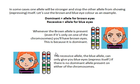The only time this daughter could have blue eyes is if she inherited the chromosome from her dad that had the blue allele and the chromosome from her mum that had a blue allele. This is the same for all recessive alleles — they're only ever expressed, only ever shown, when there is no dominant allele present.